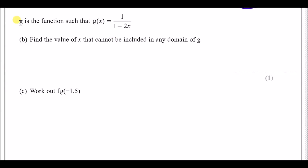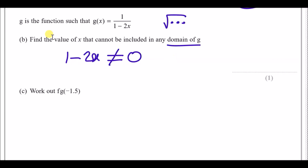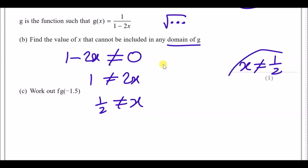g(x) = 1 / (1 − 2x). Find the value of x that cannot be included in the domain of g. For a fraction, the denominator cannot equal zero, so 1 − 2x ≠ 0. Solving: 2x = 1, so x cannot equal ½.